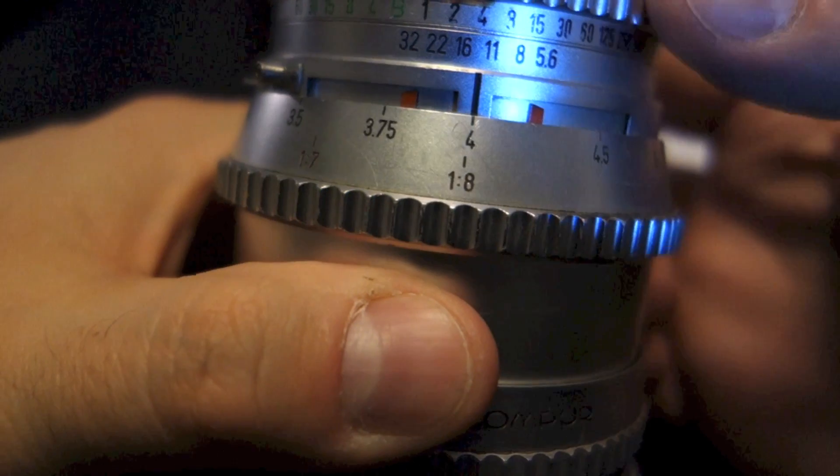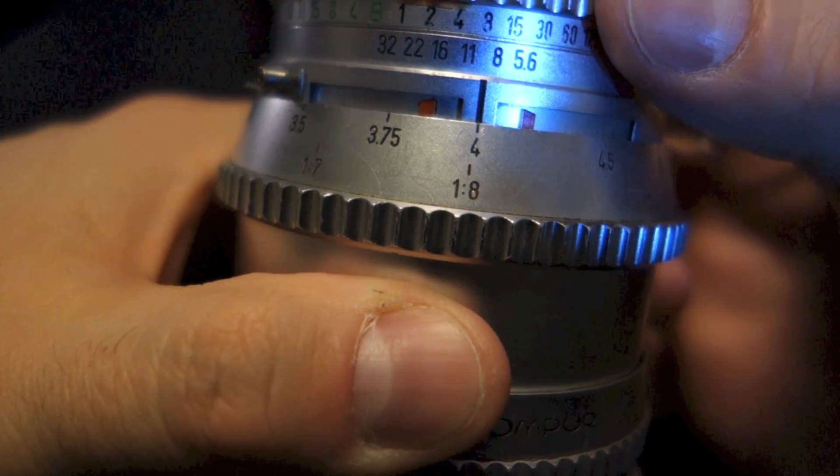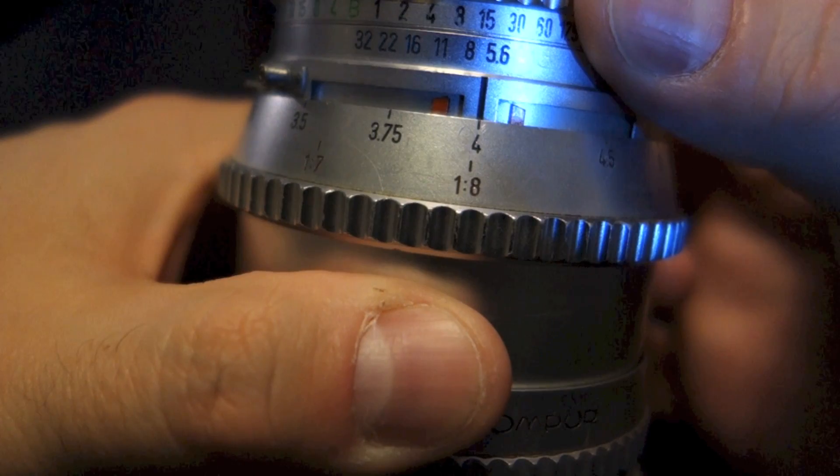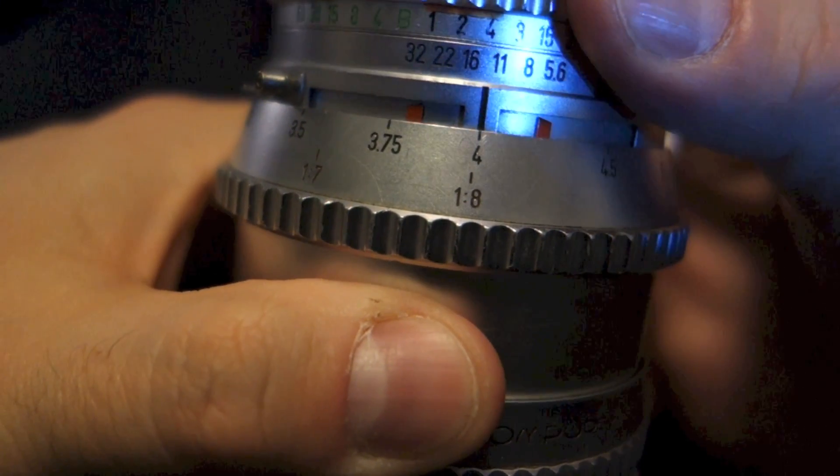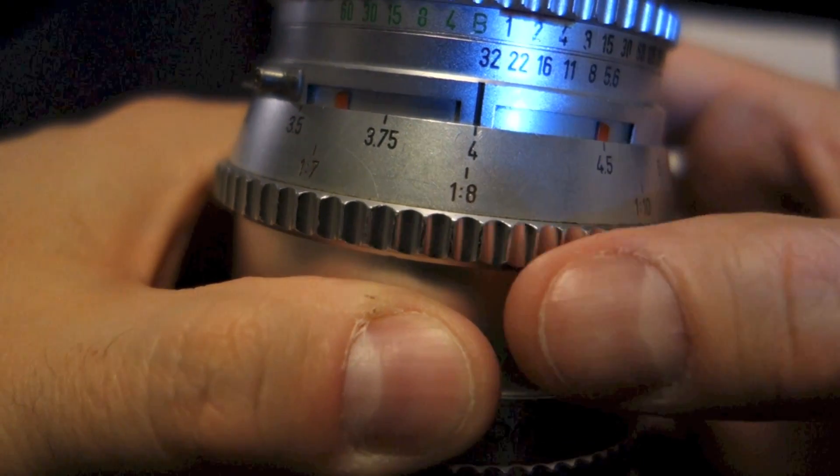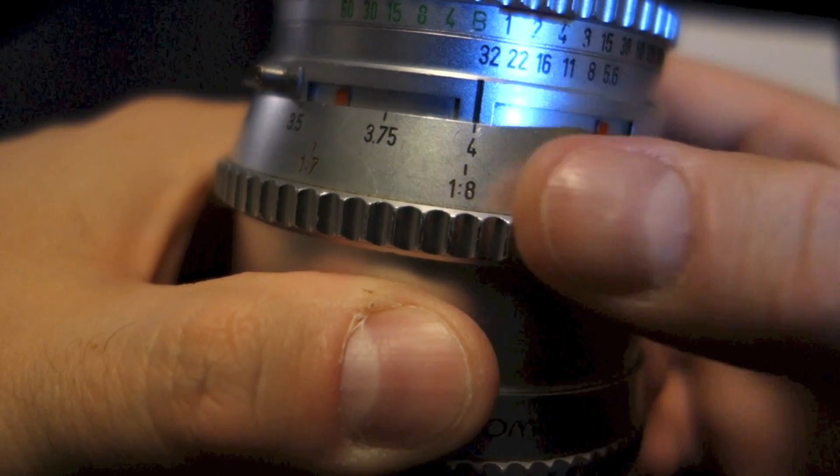Now what happens if I open the lens up? You see those guys moving together? The depth of field is shrinking. If I move towards f32 and close the lens down, the depth of field is spreading out.